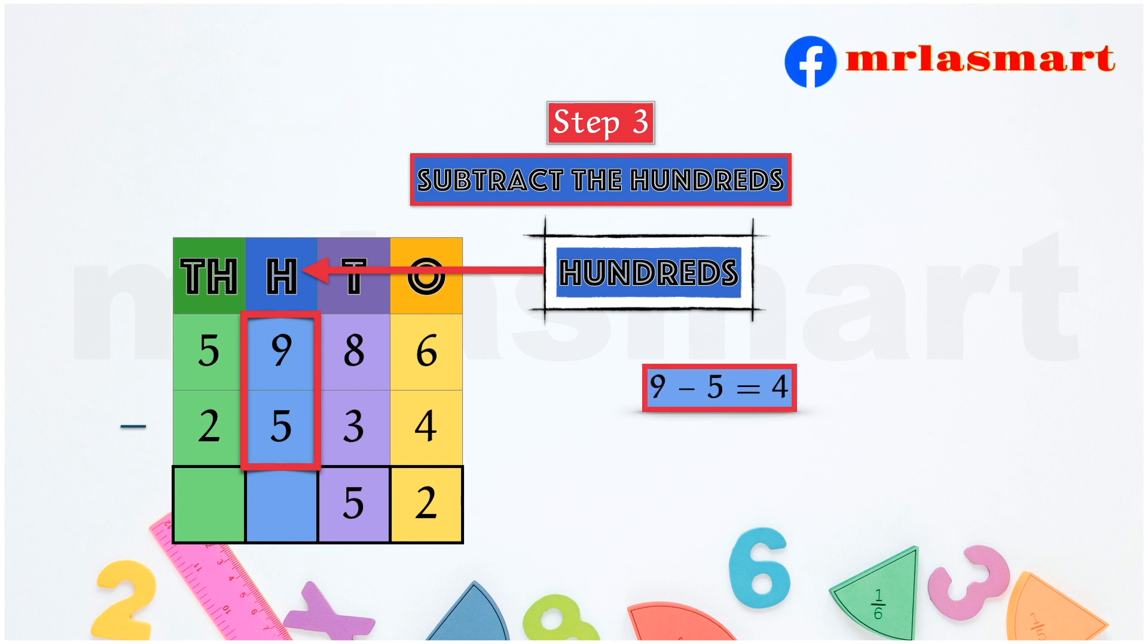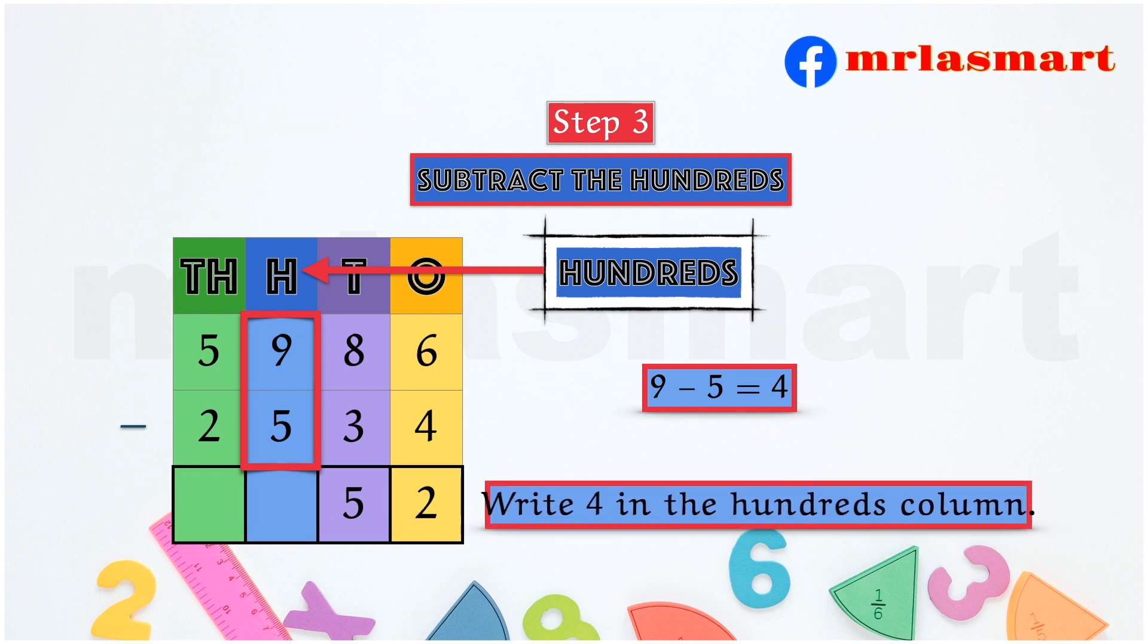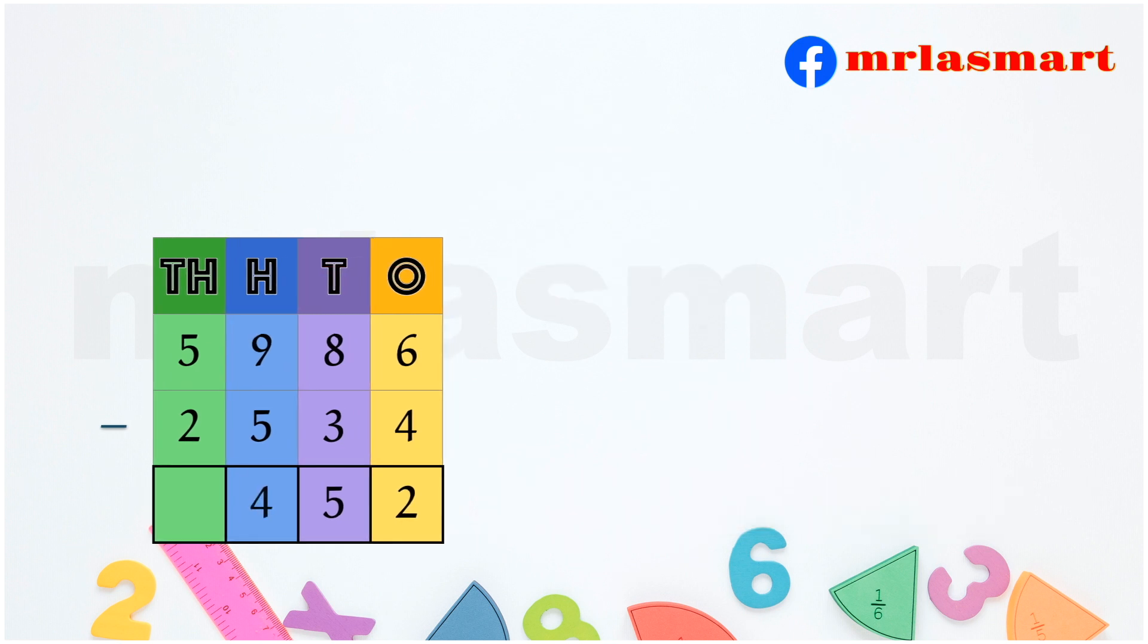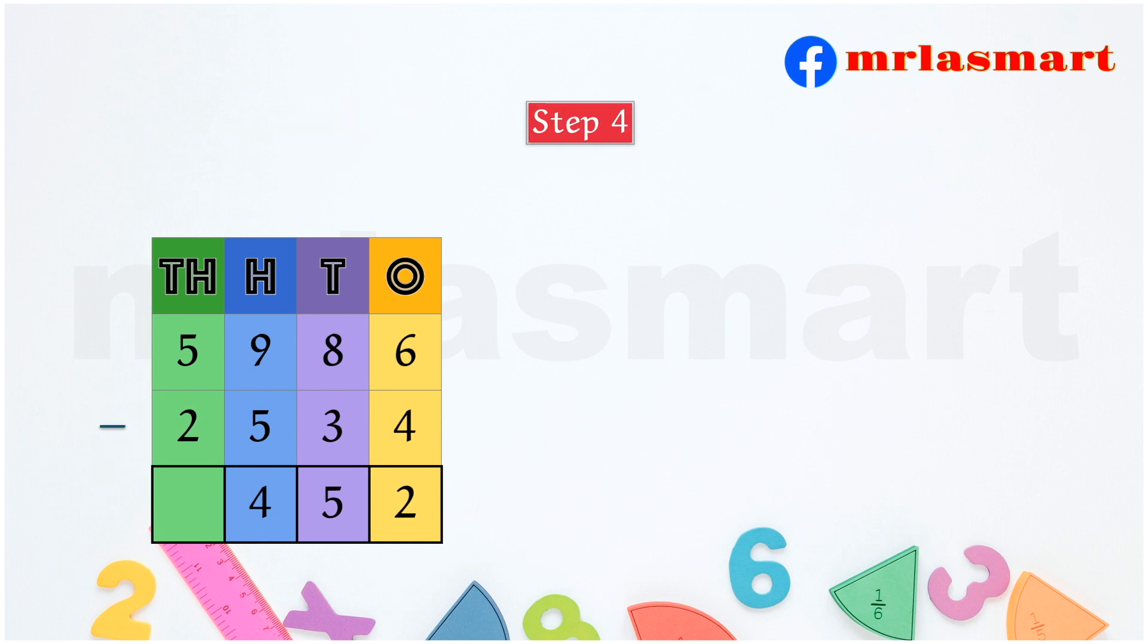Step 3. Subtract the hundreds. 9 minus 5 equals 4. Write 4 in the hundreds column.